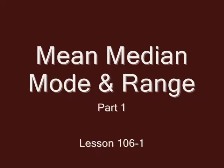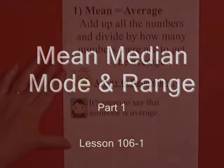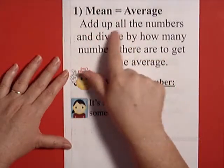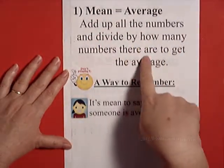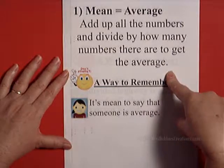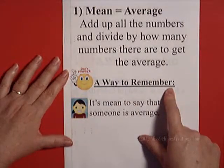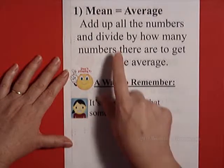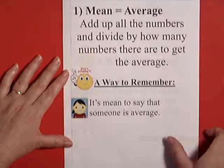Today's lesson is on mean, median, mode, and range. Let's start out with mean. Mean means average. You just add up all the numbers and divide by how many numbers there are to get the average. A way to remember is it's mean to say that someone is average, so mean equals average.